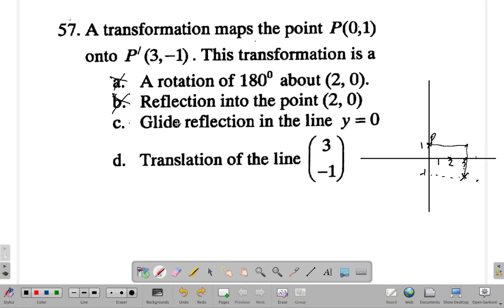Let's look at option D: translation of the line (3,-1). If you have (0,1) and you add it to (3,-1), you get 0 plus 3 equals 3, 1 plus negative 1 equals 0. But it didn't end up at (3,0), so this is the only answer that is valid. The answer for question 57 is C.